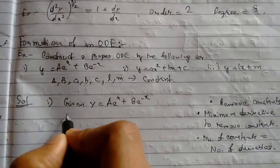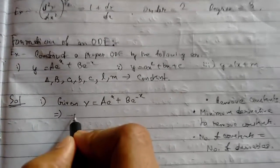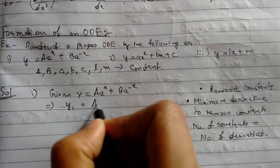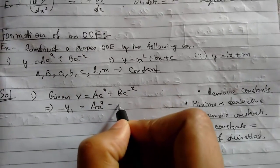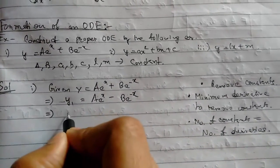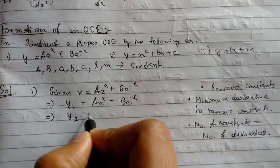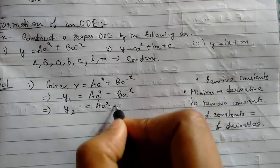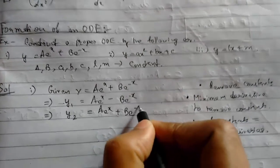So first we need to remove the constants, so we will differentiate it. y₁ or dy/dx will be ae^x - be^(-x). Now we see that the constants are not removed, so we will differentiate it again. y₂ will be ae^x + be^(-x).